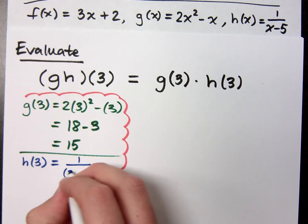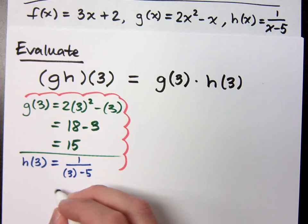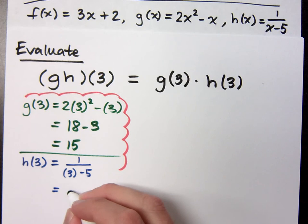1 over 3 minus 5. So that's what? Negative 1 over 2, right?